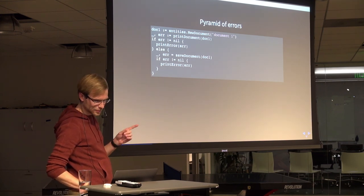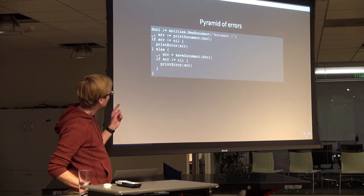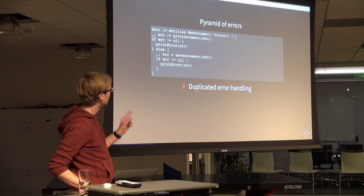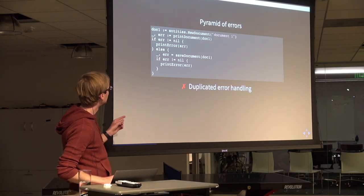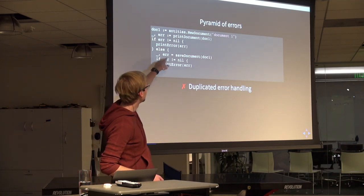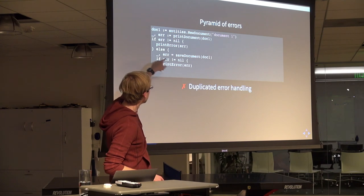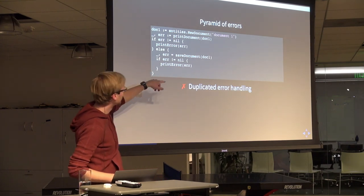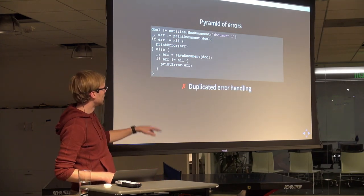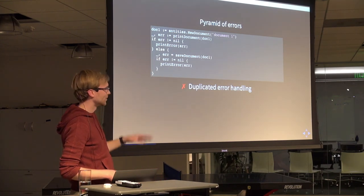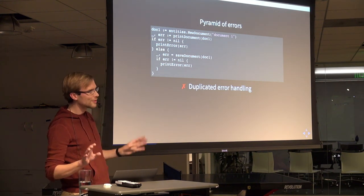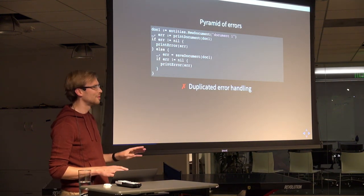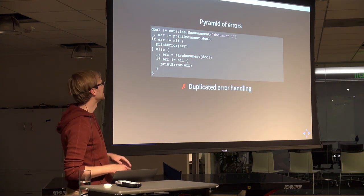I'm going to nitpick this for a second. If you do this, you're duplicating your error handling quite a lot. These two lines — if error is not equal to nil, print error — appear twice here. In a normal application you'll see that thousands and thousands of times. Every function call that could possibly fail, you'll see that happen.